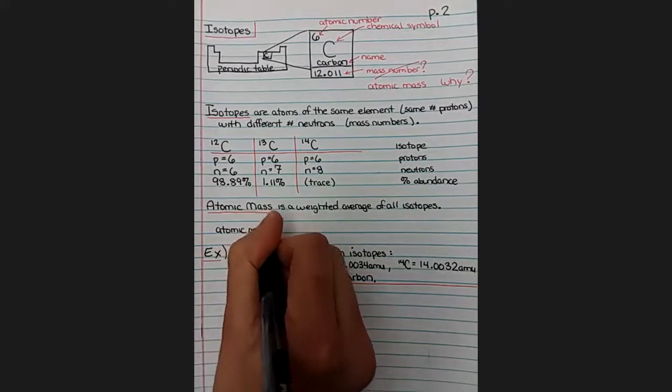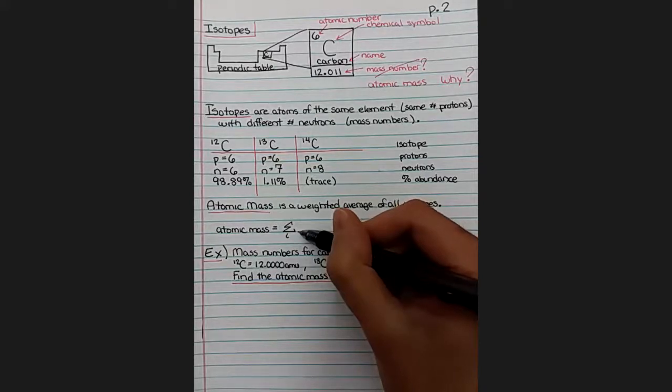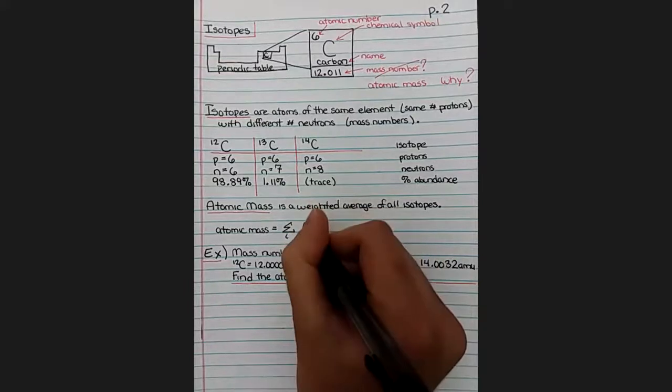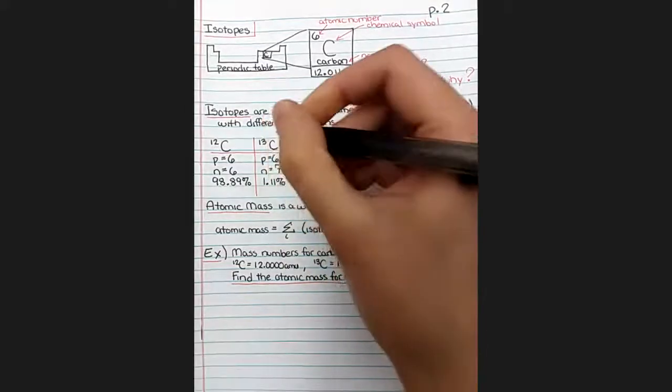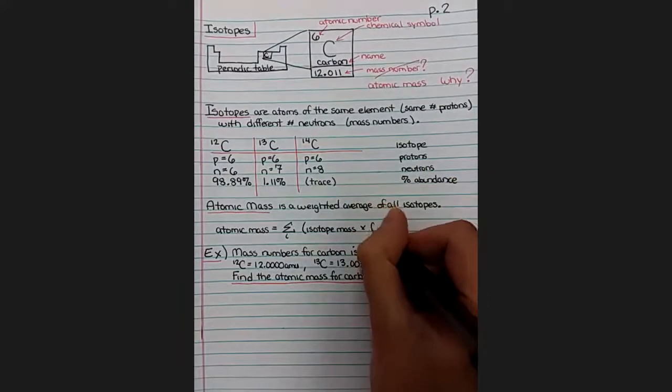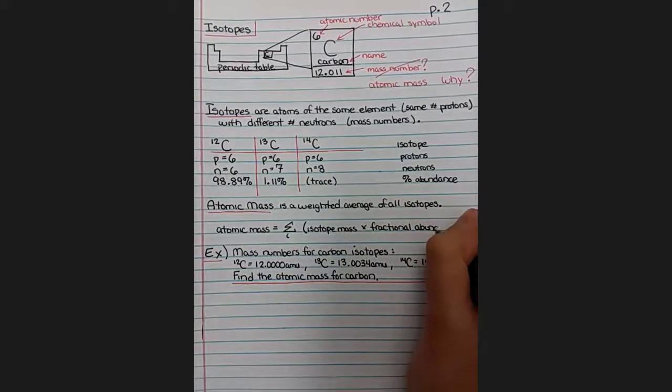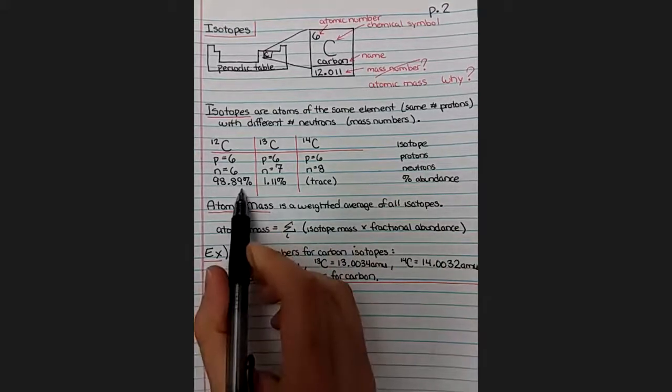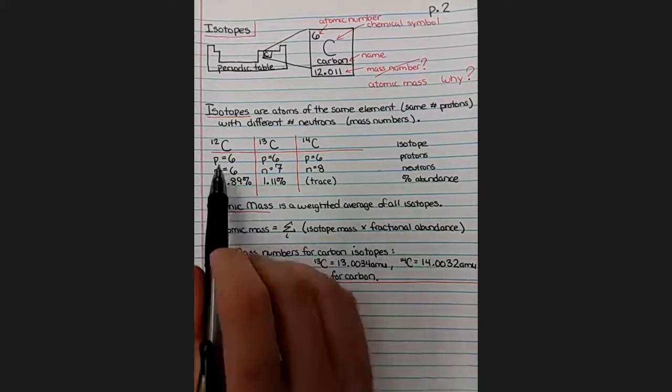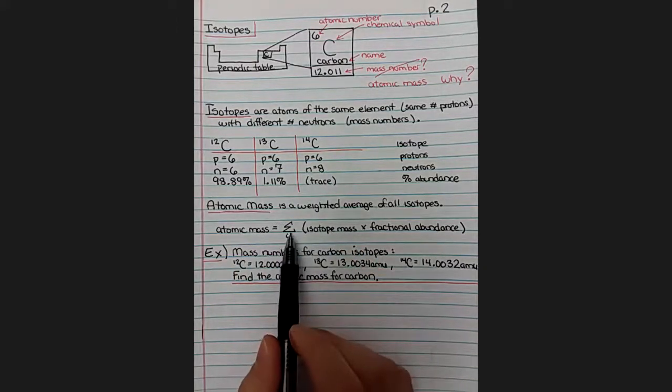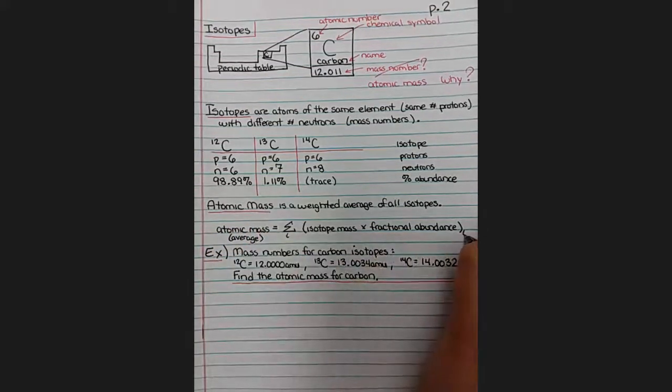The atomic mass is calculated by taking the sum. This is a capital sigma. This means we're going to take the sum of several identical looking terms. Each of those terms is going to be an isotope mass, which is the mass number, times fractional abundance, which is just the decimal version of this percentage. And so the sigma means that we take the isotope times the fractional abundance for each of the different isotopes that exist naturally for that element, and we add them all together, and that gives us our weighted average.